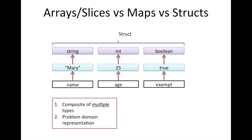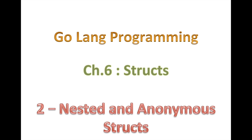With a map, your index can be a string or a number but still has to be of the same type. With a struct, everything is open - we use field names to access fields of the struct. Those are just whatever identifier you wanted to use that made sense, like name and age. Field names are different identifiers that can point to different types within that struct.